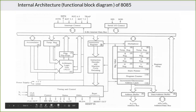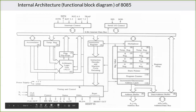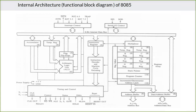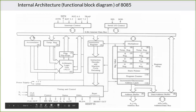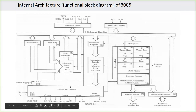If that bus transfers the address of the memory, we call it the address bus. When it carries data, we call it the data bus. And when it carries control signals, we call it the control bus. These are all the control signals, and this is the interrupt control signals, and this is the serial I/O control signals. All these things externally act on all the registers. This is only a functional block diagram — we are going to see each and every part separately.